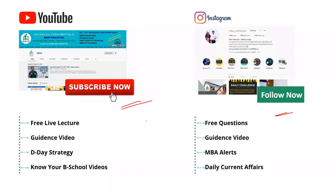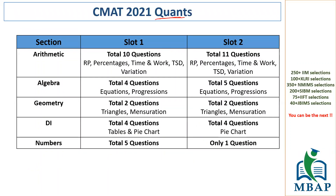Let's go ahead. A quick reminder to follow us on YouTube and Instagram — subscribe to our channel for regular updates. Now, for the first section which is Quant (CON): slot one and slot two roughly have the numbers of questions we remember from students, and one of our faculty also gave the exam. Overall, the CON section was on the moderate side — people good with quant found it easy, but others found it tough.